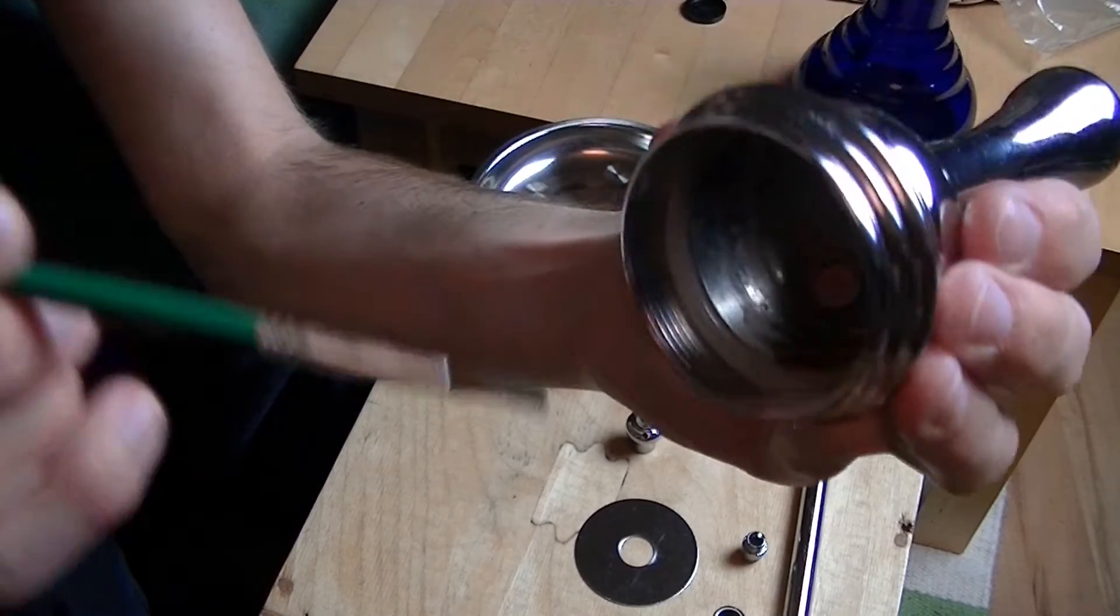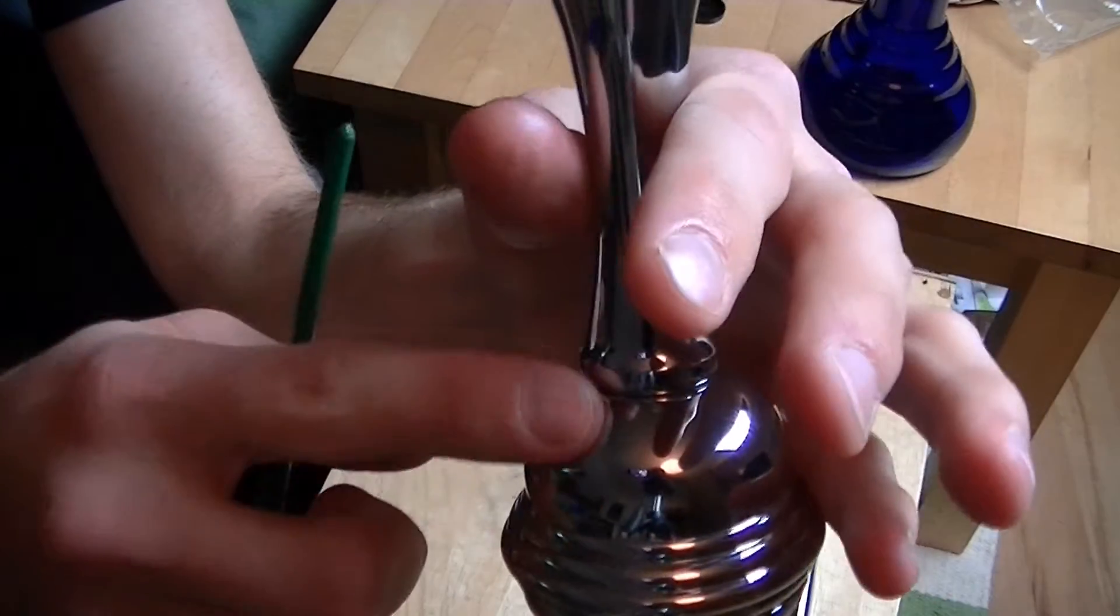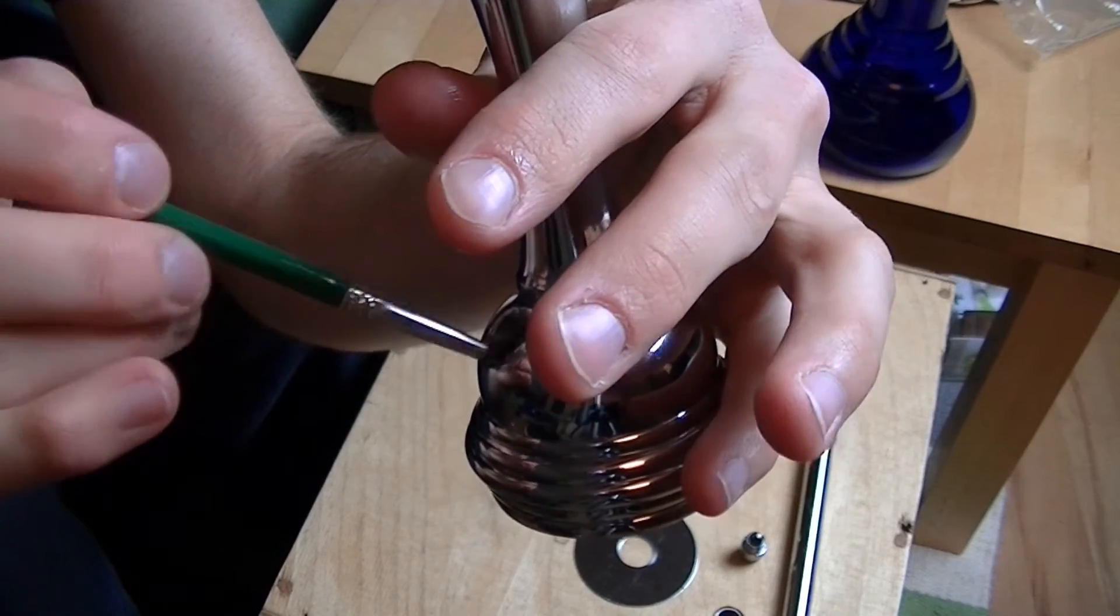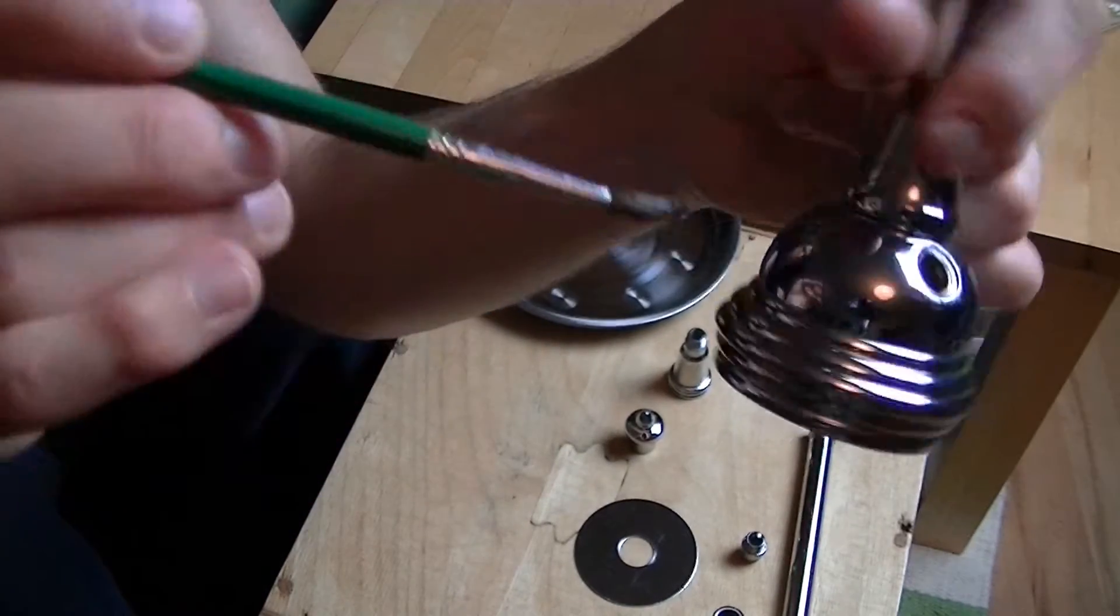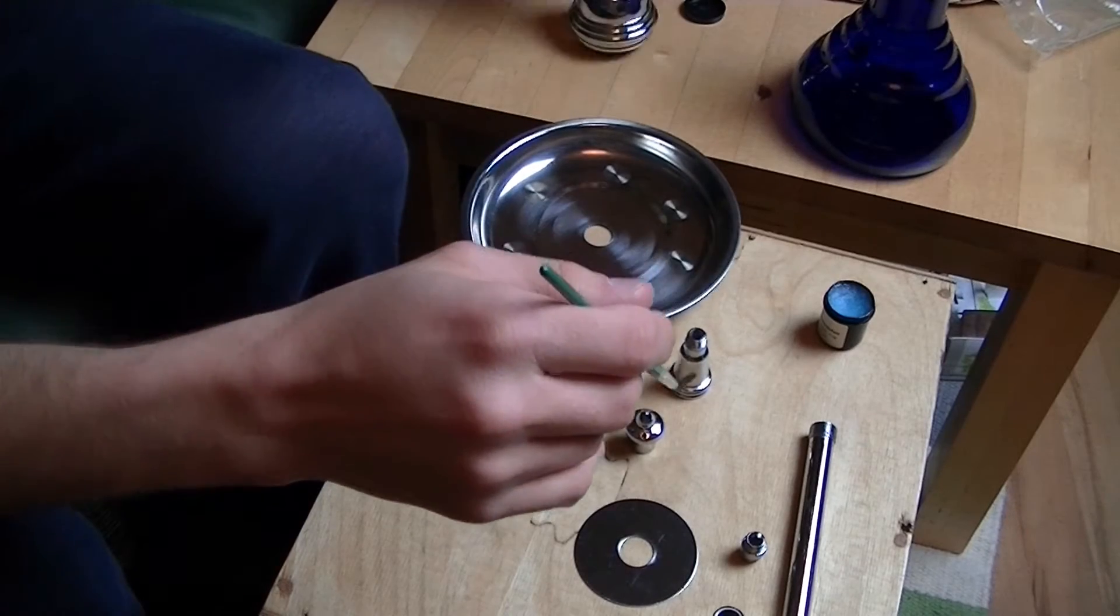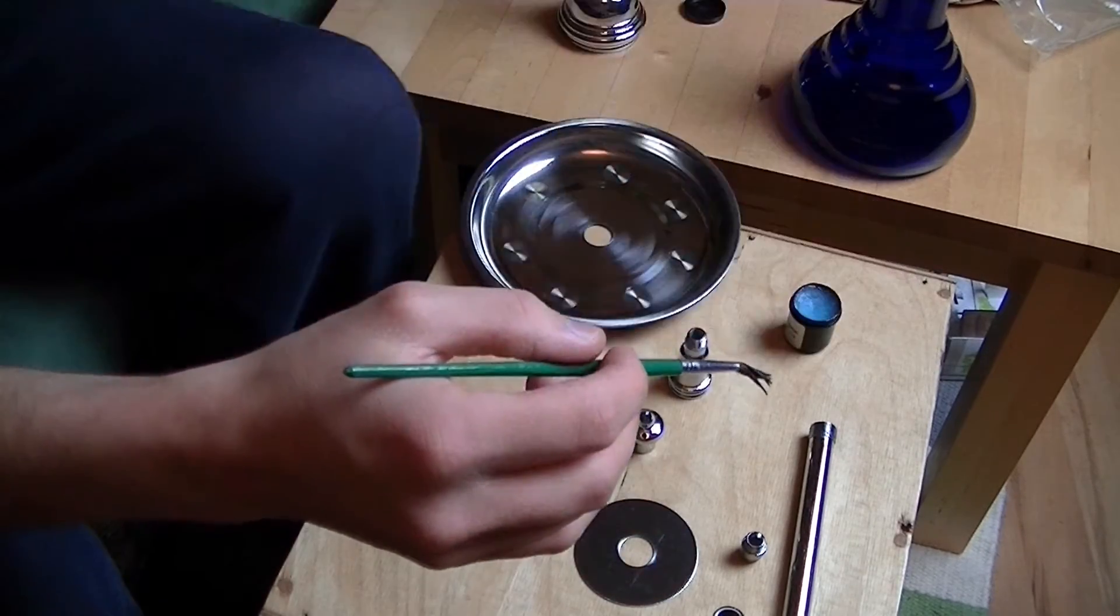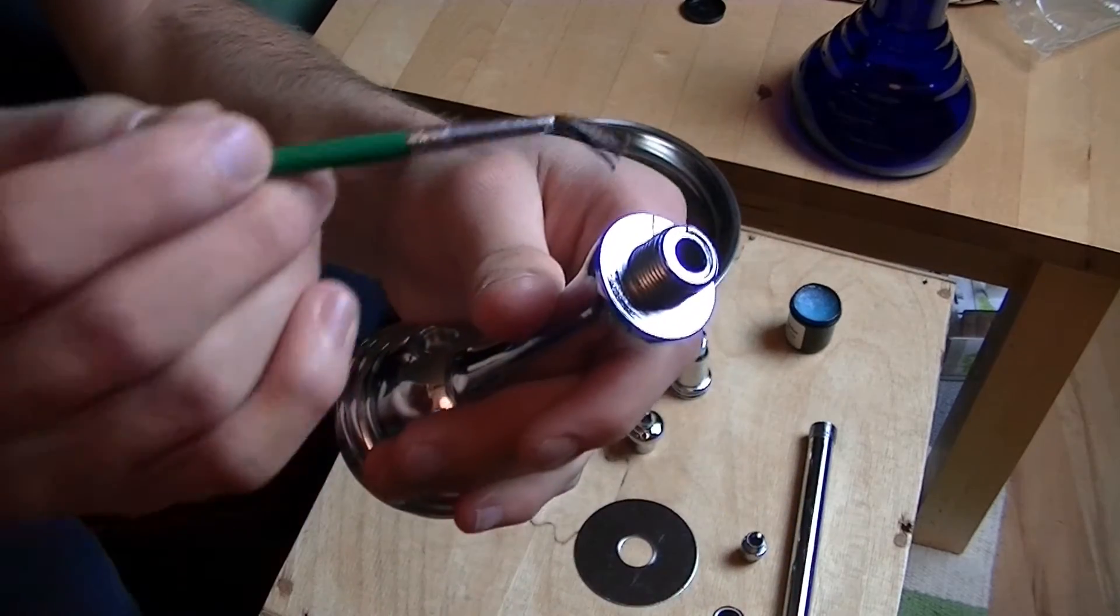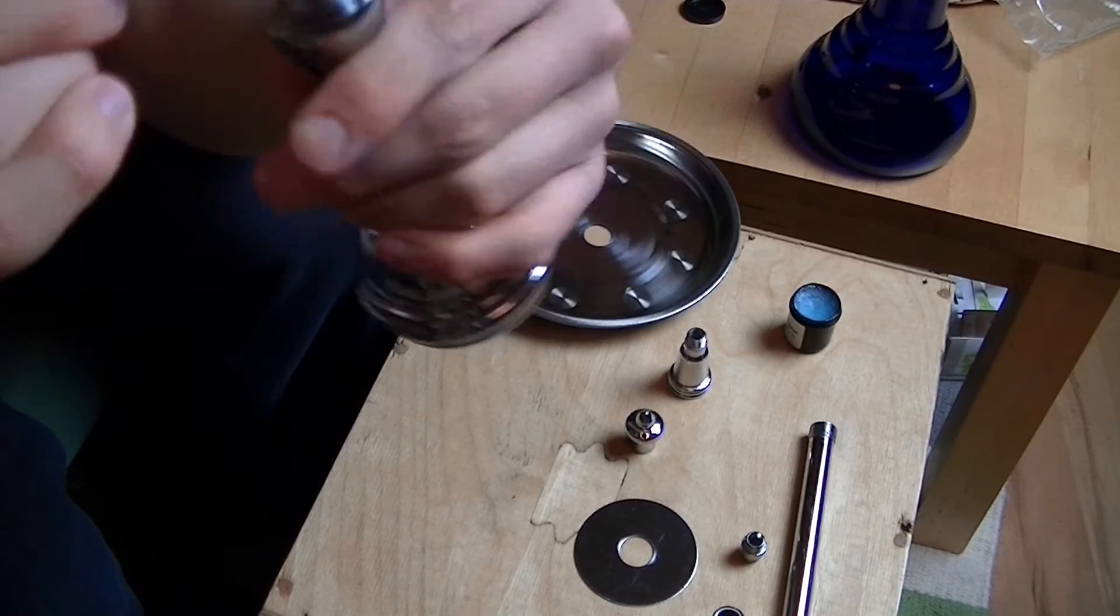Dann könnt ihr noch hergehen und hier die eingefrästen Löcher für Schlauchadapter und Ventil könnt ihr auch noch schnell durchölen. Einfach schnell rein gehen, zack zack fertig. Das ganze macht ihr dann bei der Rauchsäule auch noch oben am Kopfadapter, also sprich da wo später der Kopfadapter hinkommt an diesem Gewinde ebenfalls, einfach einmal außenrum.